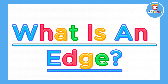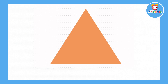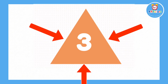Now for the main part of the lesson. First we need to understand what an edge is. An edge is the number of sides a shape has. Here's an example. A triangle has three sides, so we say it has three edges.